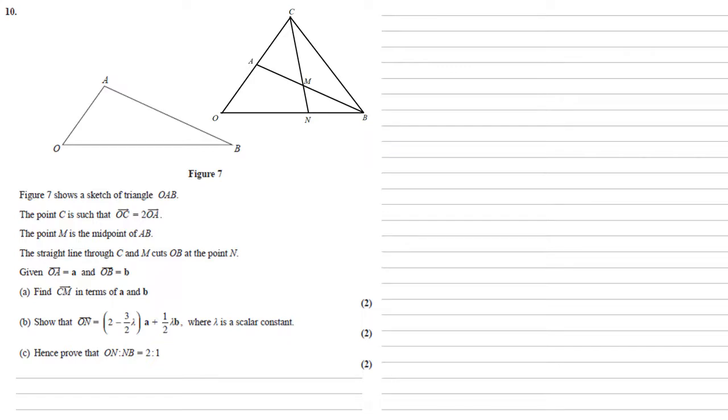For part B, we need to show that ON equals two minus three over two lambda A plus half lambda B, where lambda is a scalar constant. So firstly, from our diagram, we can see that ON is the same as OC plus CN. We can work those out, then we're getting there.